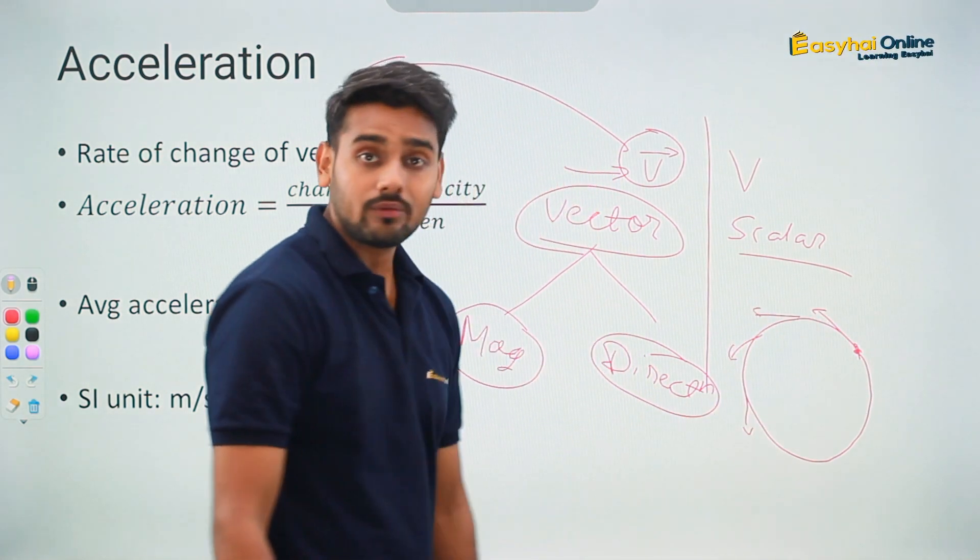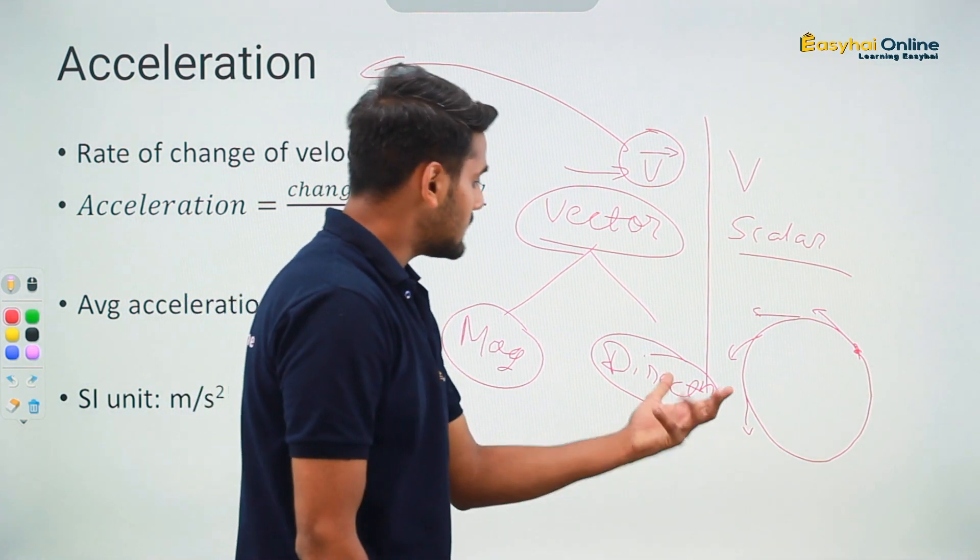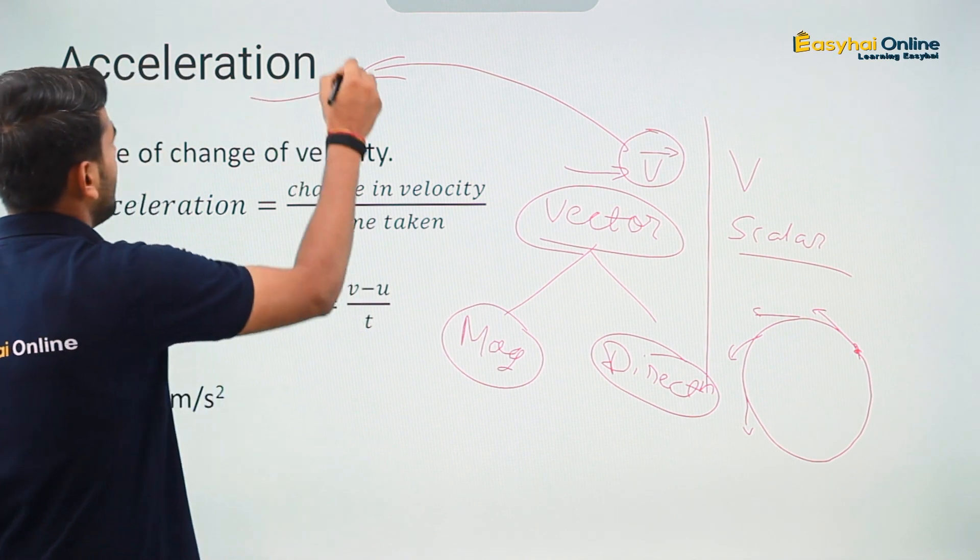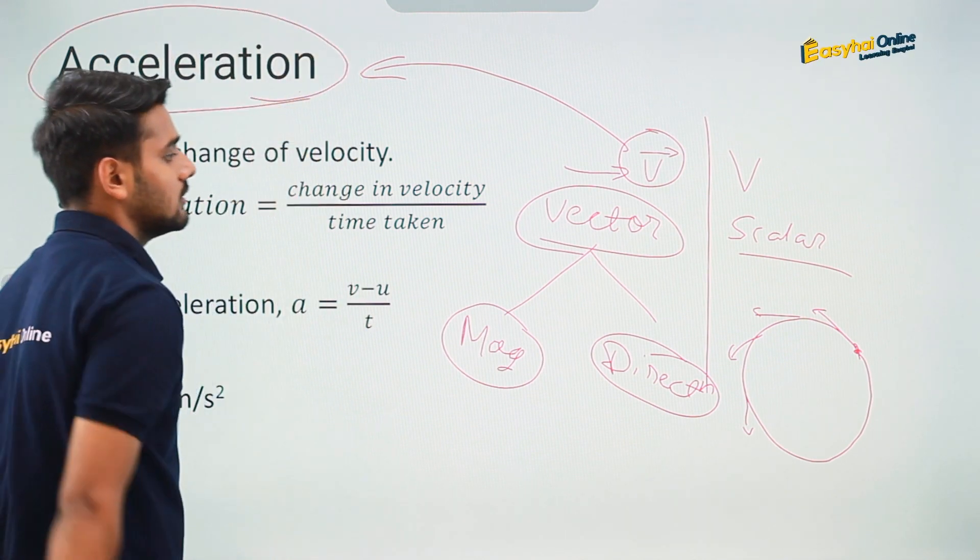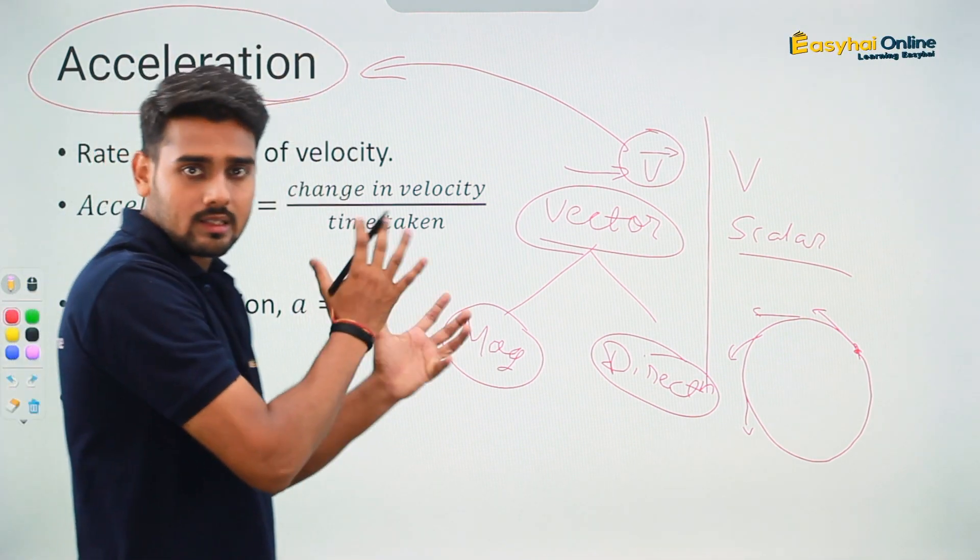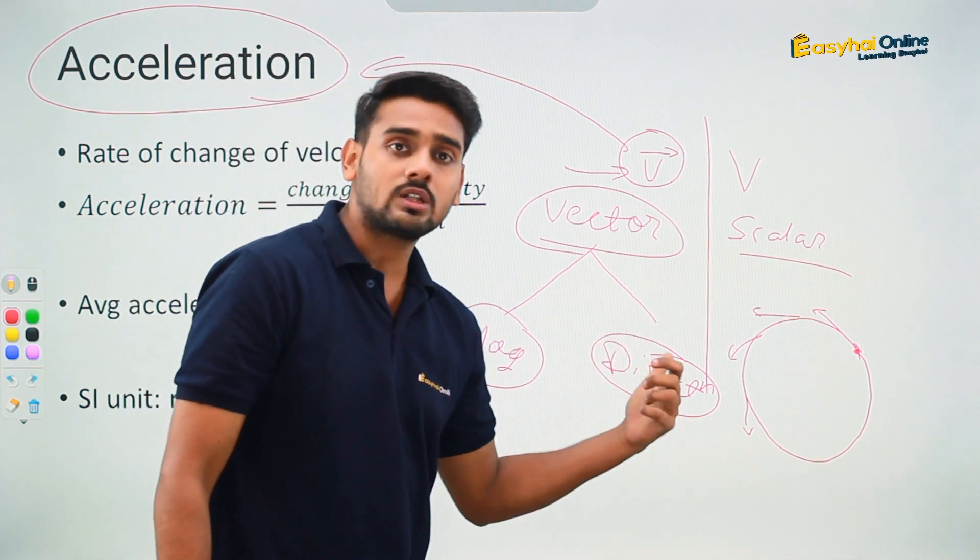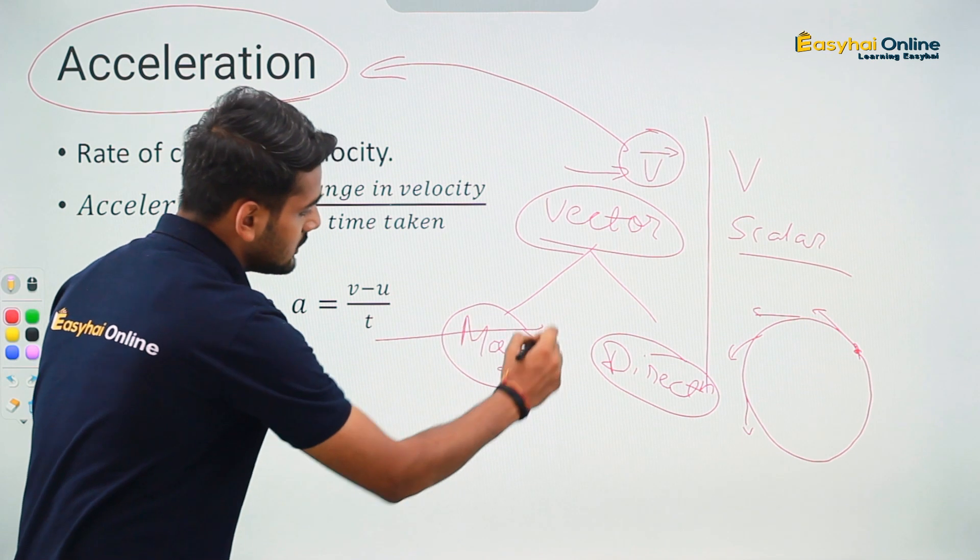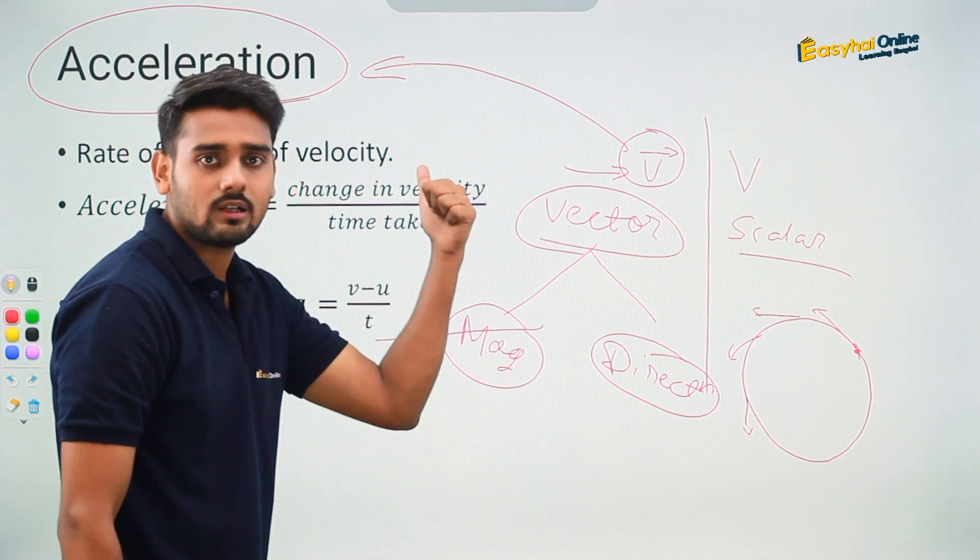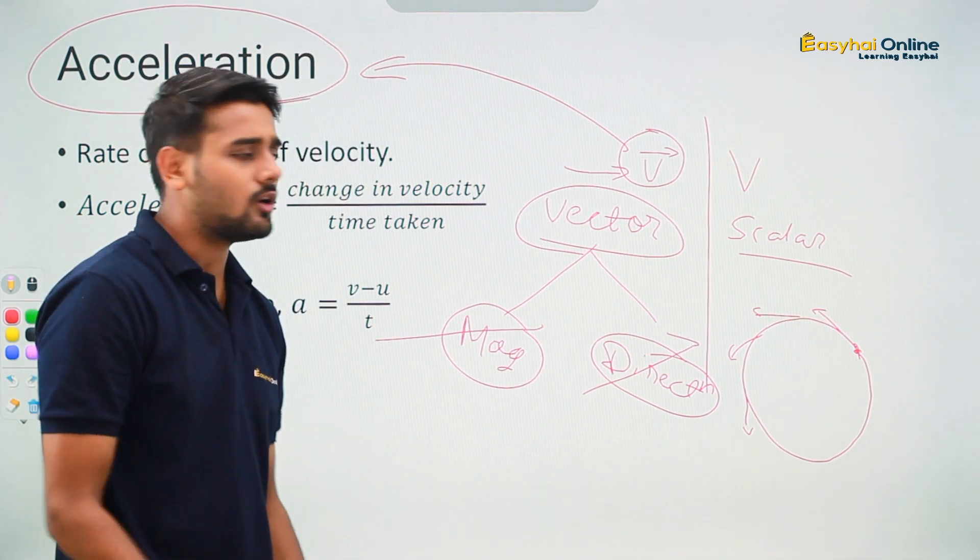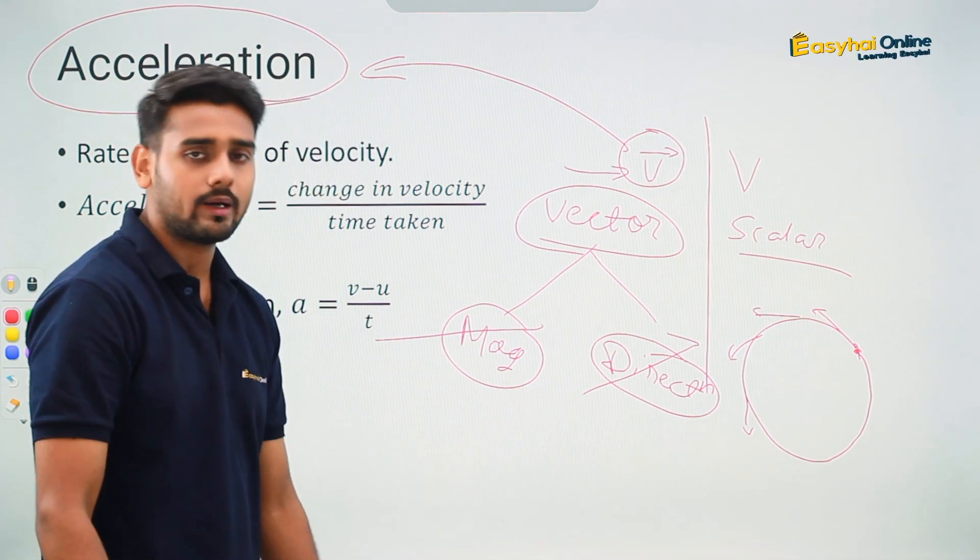Now, when the velocity changes, as a result, there is some acceleration. So, what is acceleration? We are going to discuss that, but keep in mind that in velocity, if the magnitude changes, there will be some acceleration. If the direction changes, there will be some acceleration and obviously if both of them change, there will be acceleration.